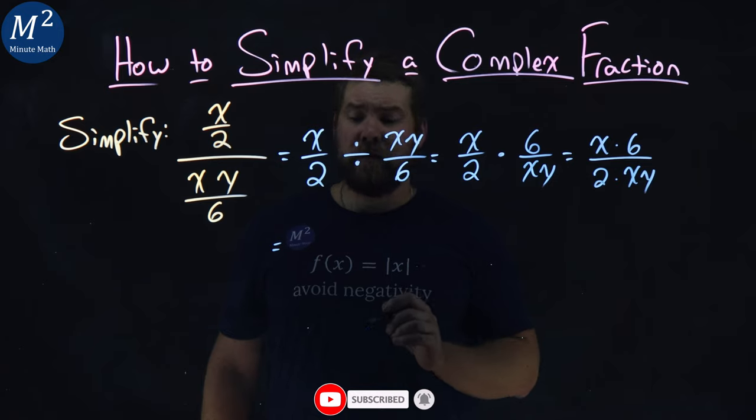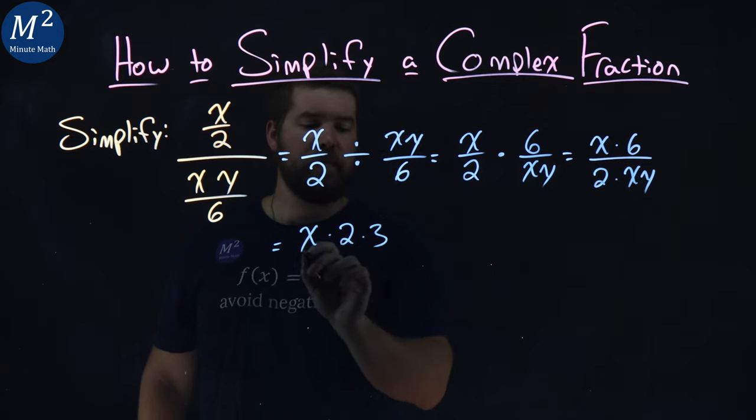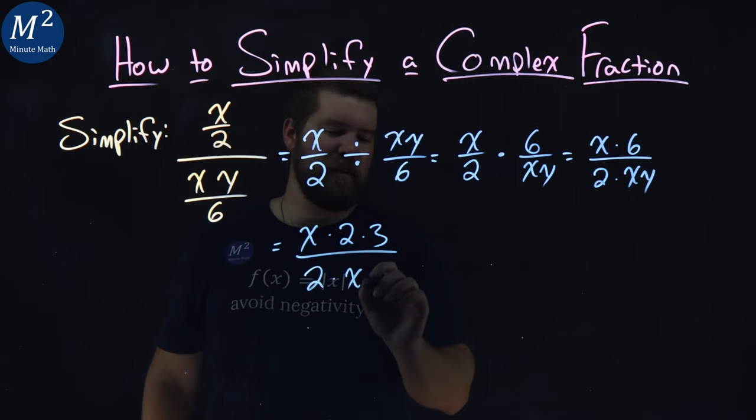Let's see if we can break this down some. x times 6 is a 2 times a 3 over 2 times an xy is really x times y.